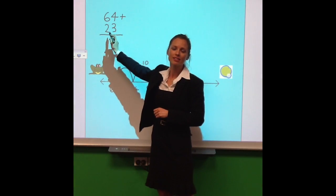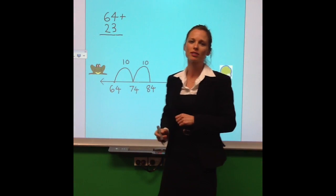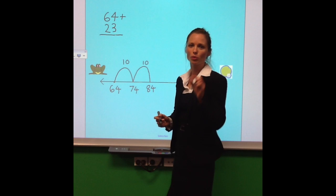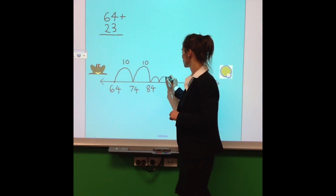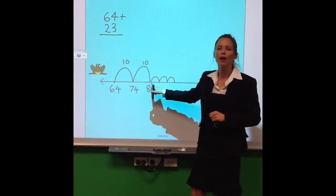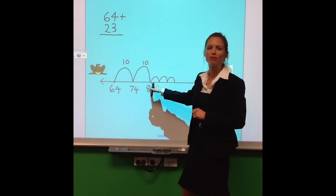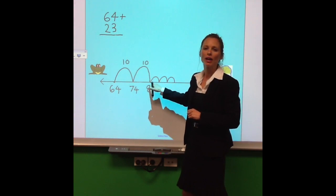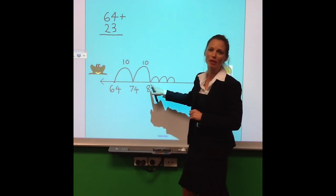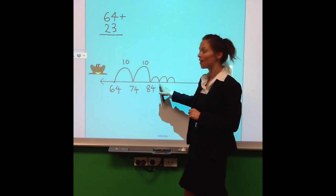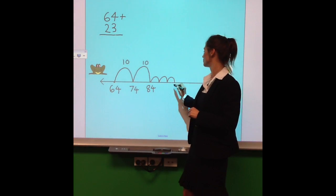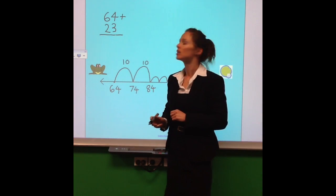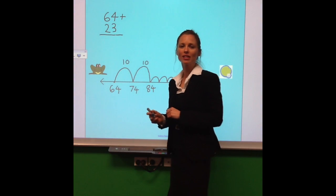So we've done our tens, now we're going to move to our units. There are three units. So now we just have to do three small jumps. And we'll start with that 84, where we left off, and we'll jump our units. You can count along with me. 84, 85, 86, 87. That's where we've landed. So 64 plus 23 is 87.